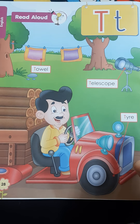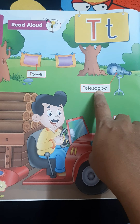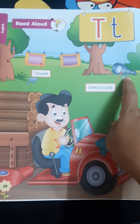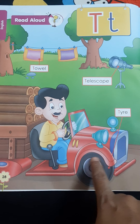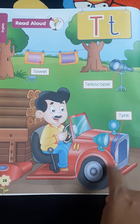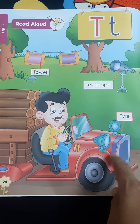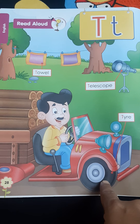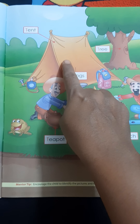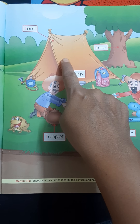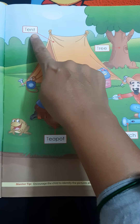This is the T - T-T towel. T-T towel. This is the T - T-T telescope. T-T telescope. And this is the — what is this? T-T tire. T-T tire.